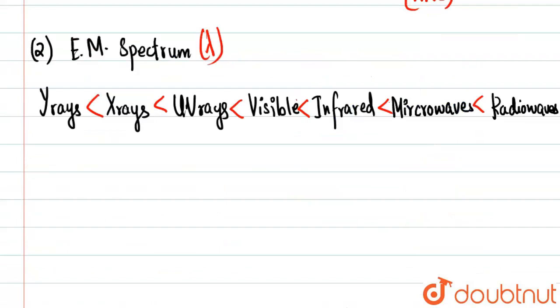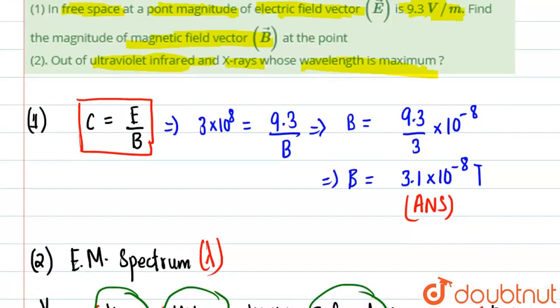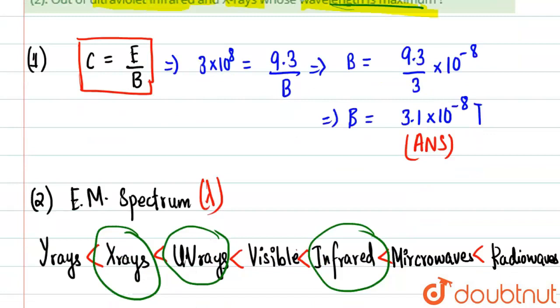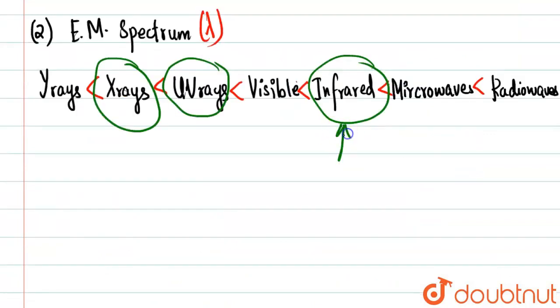Between X-rays, infrared rays and ultraviolet rays, which has maximum wavelength? If you see properly, infrared will have maximum wavelength among the three.